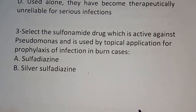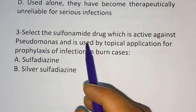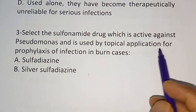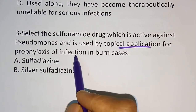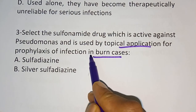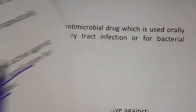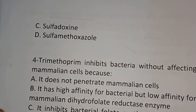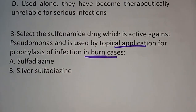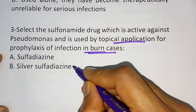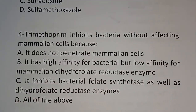Question three: select the sulfonamide drug which is active against Pseudomonas and is used as topical application for prophylaxis of infection in burn cases. Options are: sulfadiazine, silver sulfadiazine, sulfadoxine, sulfamethoxazole. The correct answer is option B, silver sulfadiazine, which is especially useful in burn therapy.